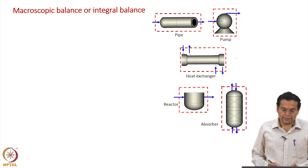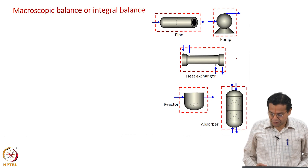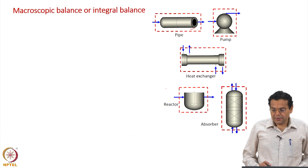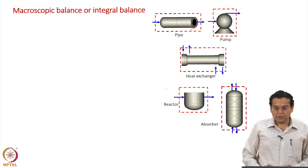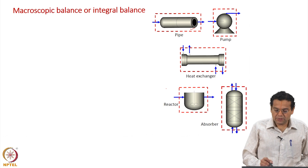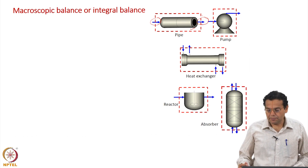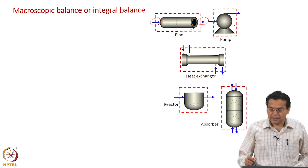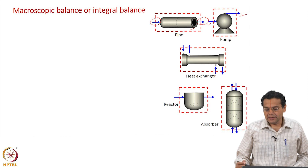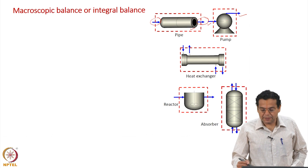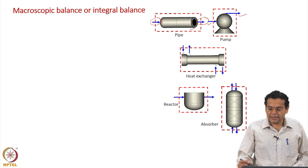Macroscopic balances are balances written over the entire equipment, and a few equipments are shown here. For example, you have a pipe here and the dashed red boundary indicates the control volume. The control volume surrounds the entire pipe and takes into account the fluid flowing in and the fluid flowing out. Similarly, for the pump the boundary is drawn around the pump and you account for what is flowing in and flowing out. In addition, you also supply some power to the pump. The power is not a material stream — what is shown are the fluid entering and fluid leaving streams.